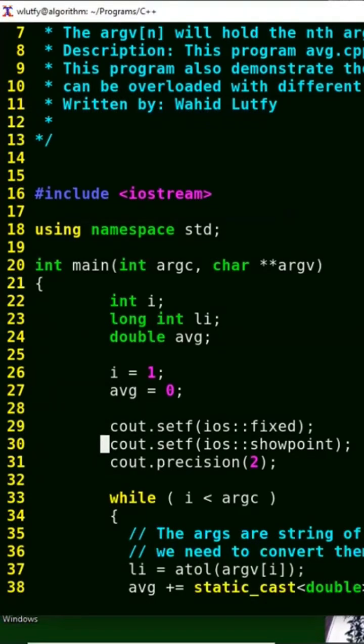At lines 29 and 31, I'm doing setf for the cout function to make sure that the IO input output is in fixed format, not in scientific notation, and then the showpoint. The mantissa support is with precision of two points, so two points for the mantissa support.